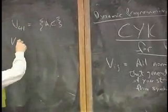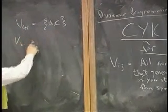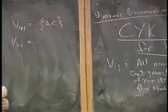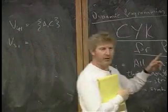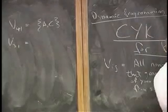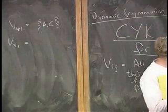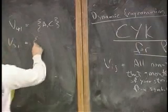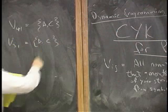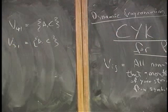How about v_3,1? What does v_3,1 refer to? Again, one symbol starting in the third position. And what generates that? B and C. Okey-doke. Who thinks they get that notation?